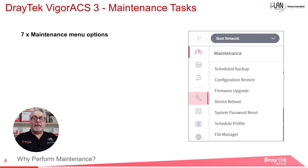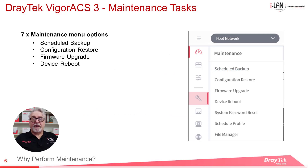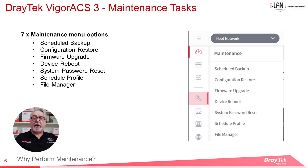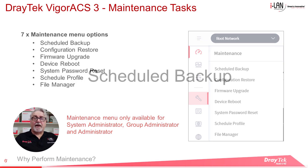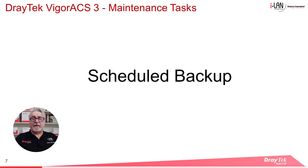Clicking on the Maintenance icon in ACS3 will display seven menu options listed here. Note that the functions within the Maintenance menu are only available to System Administrators, Group Administrators, or Administrators. Let's start by looking at the first of those menu items, which is Scheduled Backup.